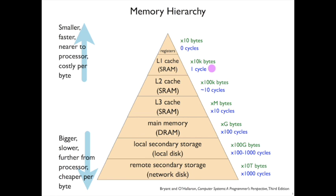L1 cache sizes currently are around tens of thousands of bytes, and you can get data from an L1 cache in just one cycle. If it's not there, you have to go down to the L2 cache, which is on the order of hundreds of kilobytes, but it takes about 10 cycles to get something from there. The next layer is L3 cache, where caches are on the order of megabytes, and it takes on the order of multiple tens of cycles to get values. Main memory is in the gigabyte range — maybe even a dozen or two gigabytes — but getting from main memory costs hundreds of cycles.